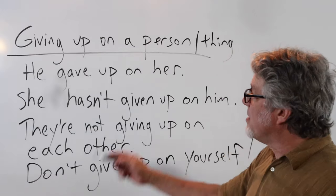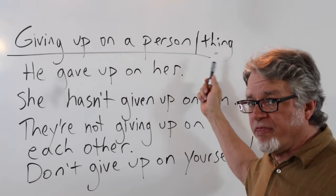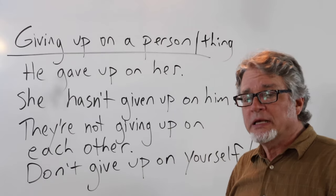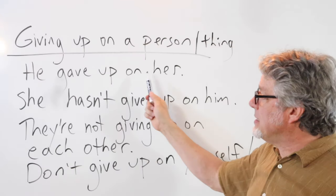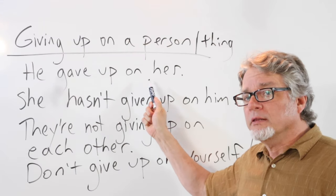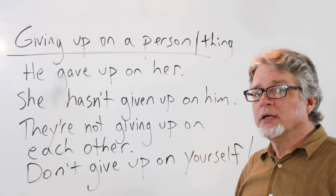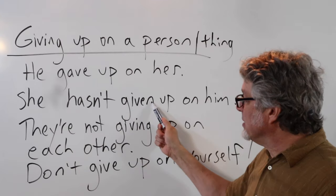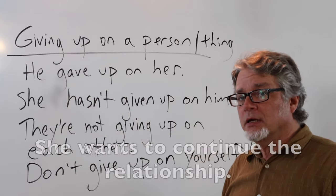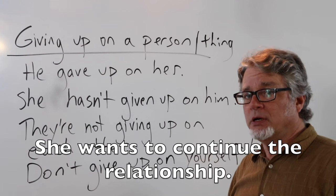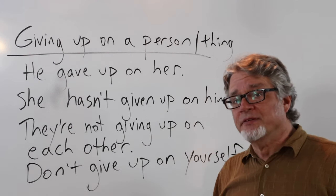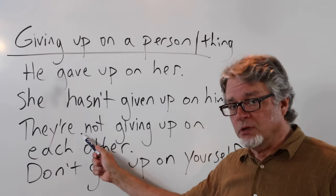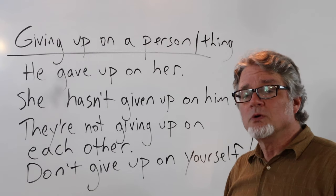It is possible to give up on a person or a thing, but if it's a person, that means that the relationship is in trouble. He gave up on her - this means that he did not want to continue the relationship. She hasn't given up on him - she wants to continue the relationship. They're not giving up on each other - this is a relationship that's in trouble but they don't want to quit.